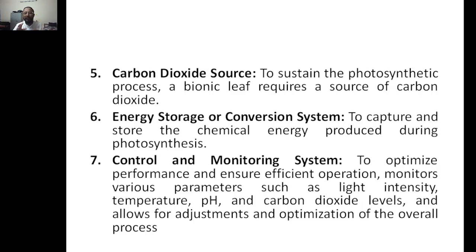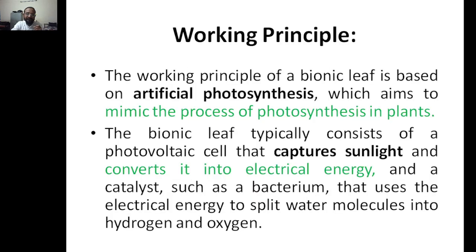There is also a control and monitoring system to optimize performance. You need to keep optimizing to find the best result — that is why it comes under controlling and monitoring. It ensures efficient operations by monitoring various parameters such as light intensity, temperature, pH, and carbon dioxide levels, and allows adjustment and optimization of overall processes.